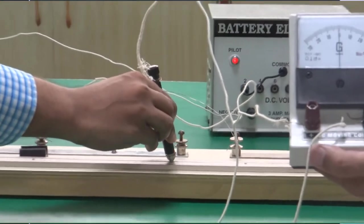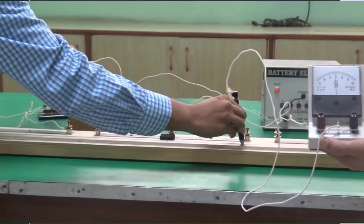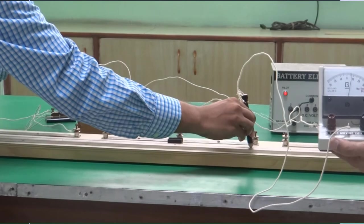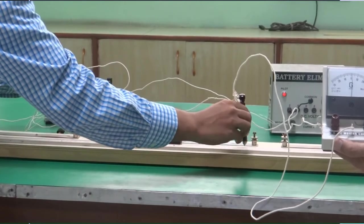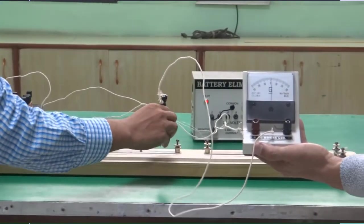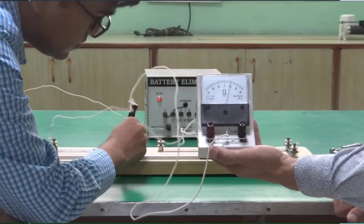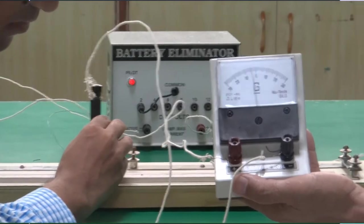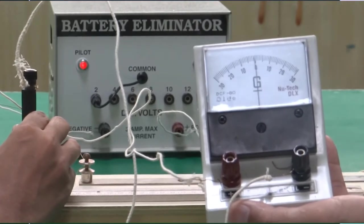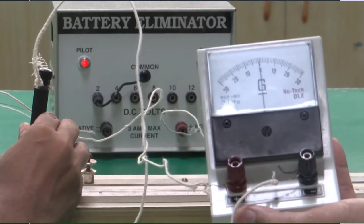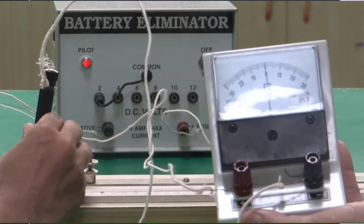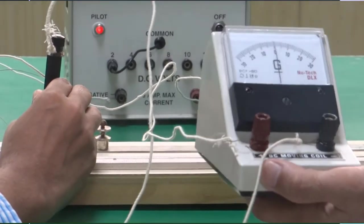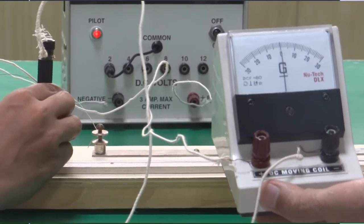For the next set of readings, take out another value of a resistance. Now let's calculate the null point. Now this point comes out at 68.5 cm.